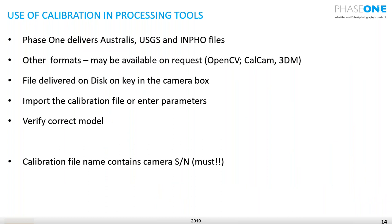We deliver calibration files in Australis, USGS, and INFO formats — not only on the written certificate but also as files in the correct formats. We can also provide OpenCV, Calcam, and 3DM formats if requested; check with us for other formats. Remember, the files are delivered on a USB key in the camera box. If the camera goes to the flight line with the USB key but you send only the paper to those doing the processing, they will miss the files — they need the files, not the disk.